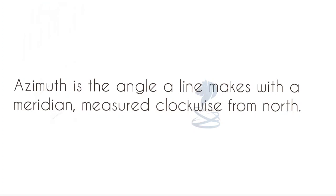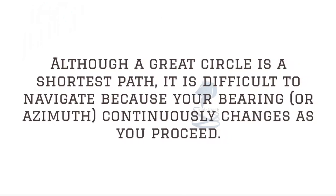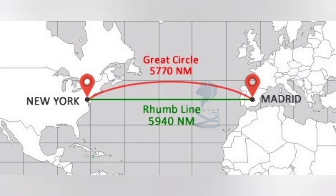Azimuth is the angle a line makes with a meridian, measured clockwise from north. Although a great circle is the shortest path, it is difficult to navigate because your bearing or azimuth continuously changes as you proceed. Great circles are mostly the shortest distance between two places when they are far apart. For example, the distance between New York and Madrid via a great circle route is 5,770 nautical miles, whereas via a rhumb line route a vessel must travel 5,940 nautical miles.